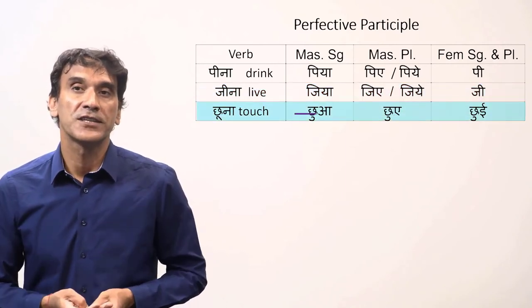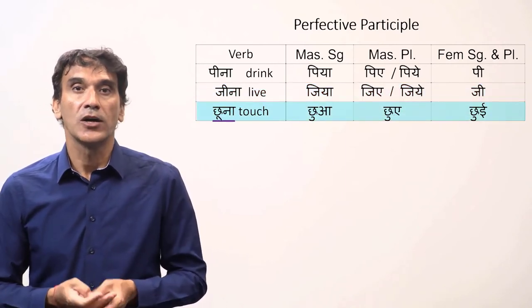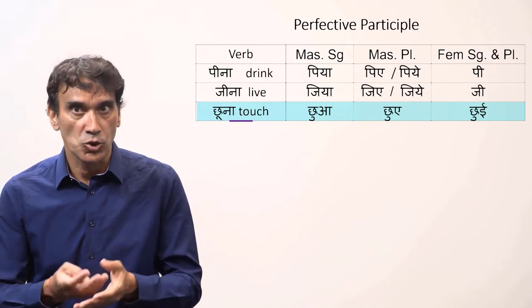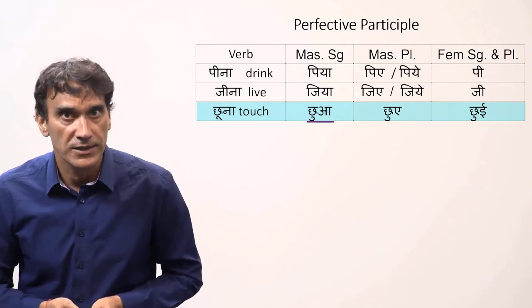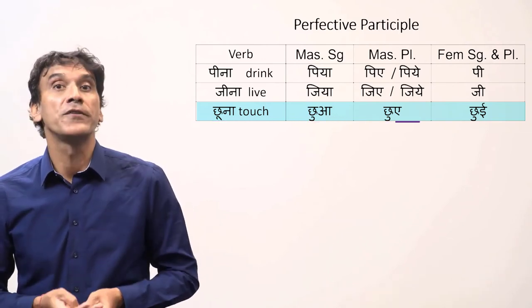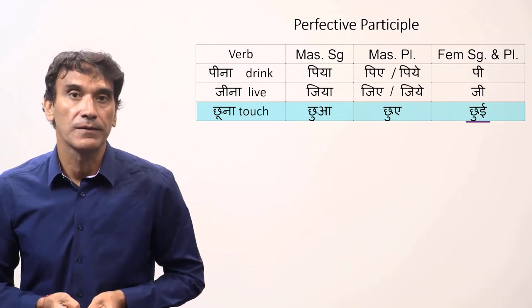Similar is the pattern with chhoona, to touch. The oo gets shortened in all the forms. Chua for masculine singular, chhoe for masculine plural, and chhui for feminine singular and plural.